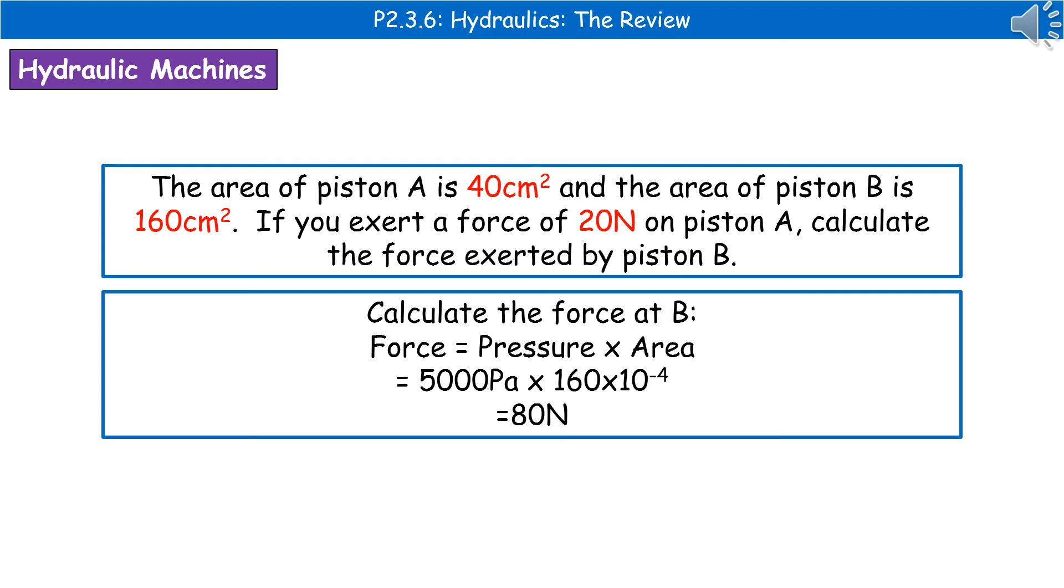Again convert it into meters, and we can then plug those numbers in. So 5000 times 160 times 10 to the minus 4 gives us 80 newtons as the answer.